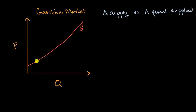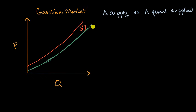A change in supply would be a shift in this entire curve. For example, if you were to go from this curve — let's call this S1 — and we were to have a shift to the right, this right over here would be a change in supply. We'd call this S2. You could view this as a shift to the right, or to the right and down.